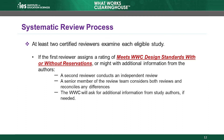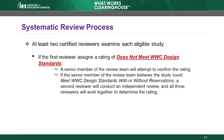At least two certified reviewers review each eligible study, including a senior member of the review team. If the first reviewer assigns a rating of meets WWC design standards with or without reservations, or thinks that a study could possibly receive one of those ratings with some additional information from the study authors, then a second reviewer will independently review the study. The senior member of the review team then considers both reviews and finalizes the study's rating. However, if the first reviewer assigns a rating of does not meet WWC design standards, the senior member of the review team will review the study and attempt to confirm the rating without sending the study to a second reviewer. If the senior member believes the study could meet WWC design standards, then a second reviewer will independently review the study.